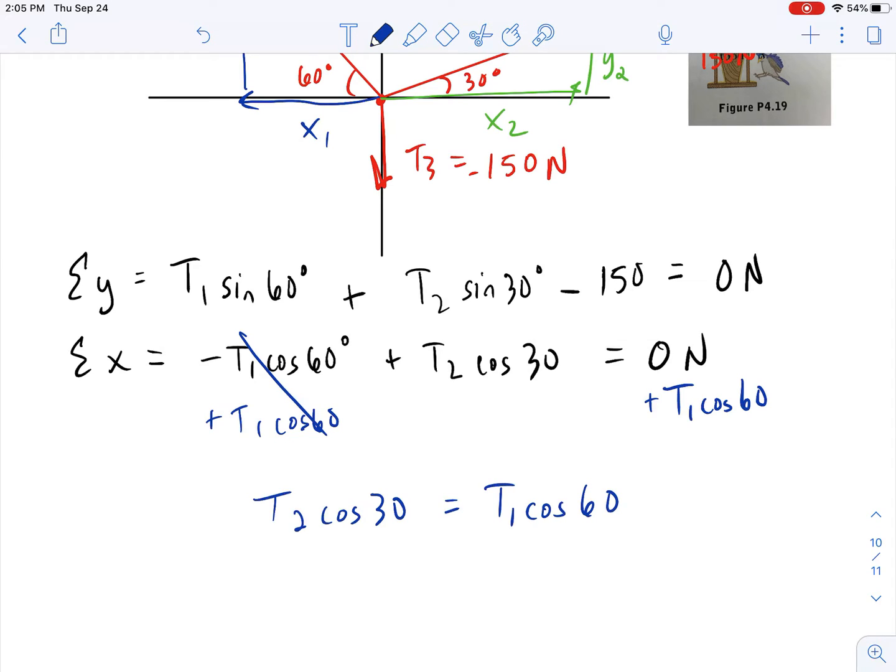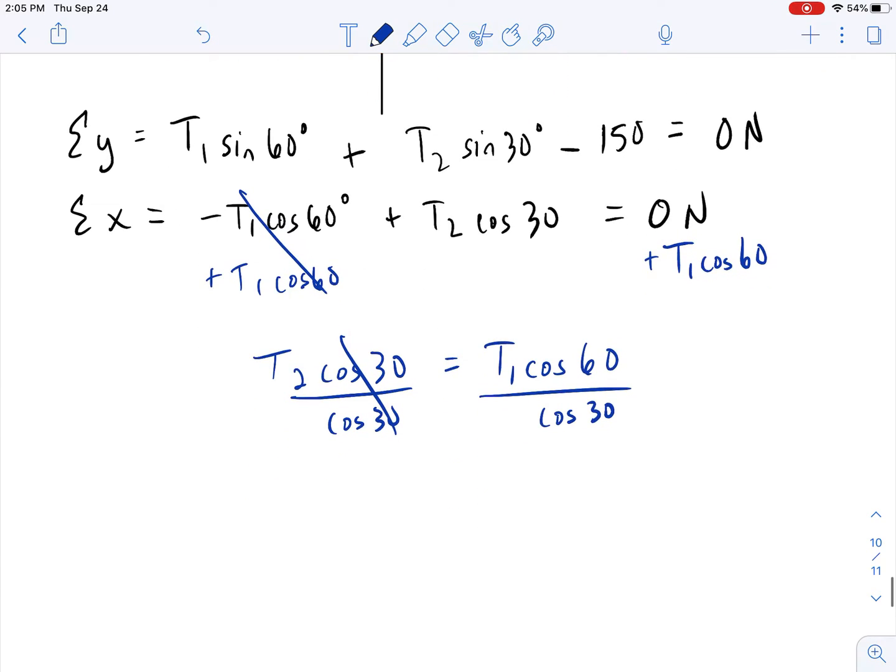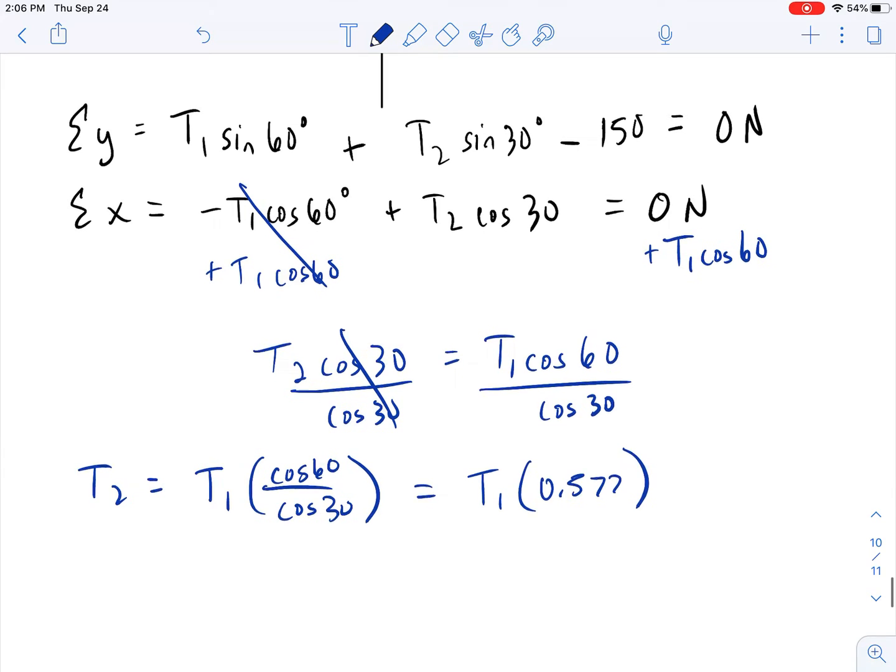And so I'm just going to rewrite this: T2 cosine of 30 is going to equal T1 cosine of 60. And then I can get rid of this cosine of 30 to get T2 all by itself. So T2 equals T1 times the cosine of 60 divided by the cosine of 30. And so we'll simplify this. So T2 equals T1 times 0.577. So now I've eliminated T2 into T1. And now what I can do is I can go back into the total Y equation and make that substitution. And so that's what we're going to do at this point.